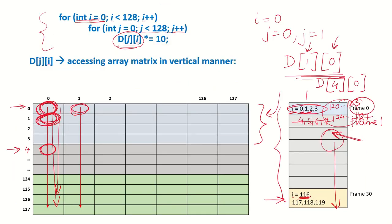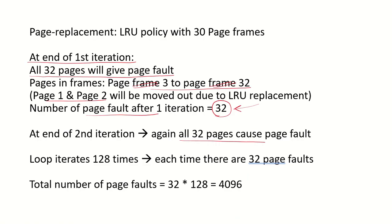And this loop it is running for i equals 0 to less than 128, that means 128 times. So the total number of page faults would be 32 into 128 which is 4096.